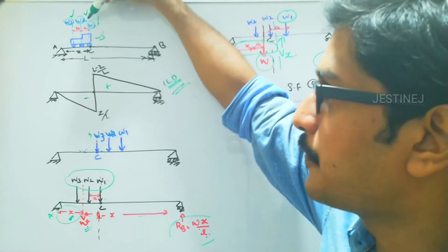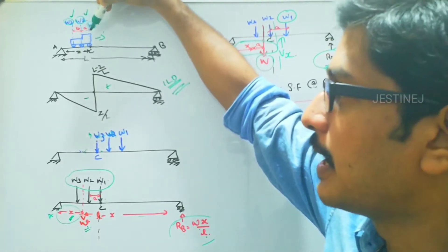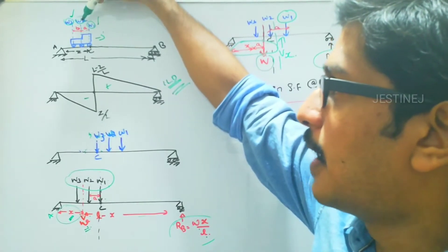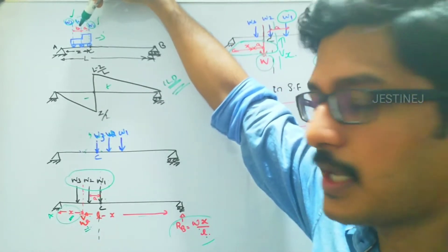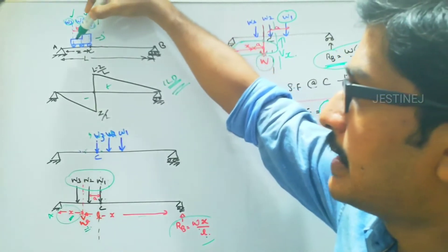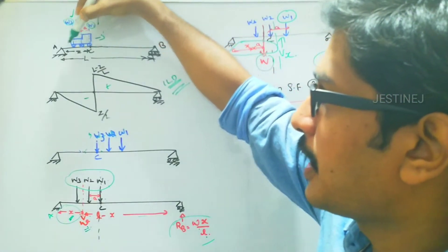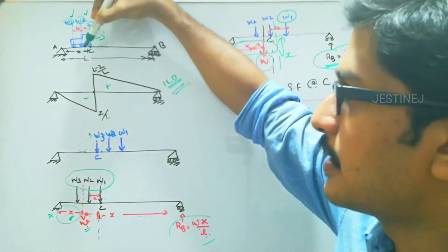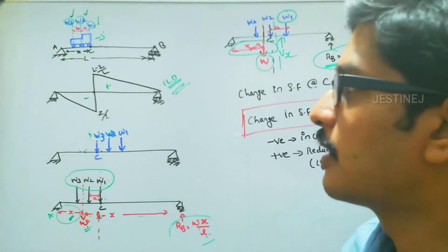The distance or the gap between W1 and W2 is a, and between W2 and W3 is b. And the distance from support A to point C is z, and the total span of the beam is capital L.